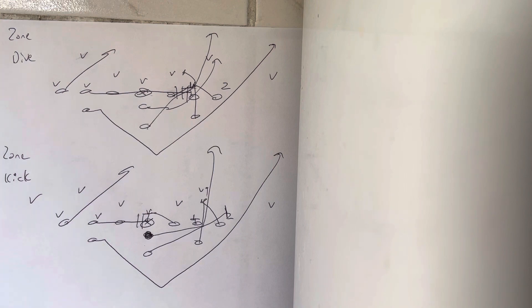So he doesn't have to hold the block longer than maybe a millisecond, and then the ball clears. That's why zone kick is a better play than zone dive against a 4-I - because it hits faster. That's the reason why.